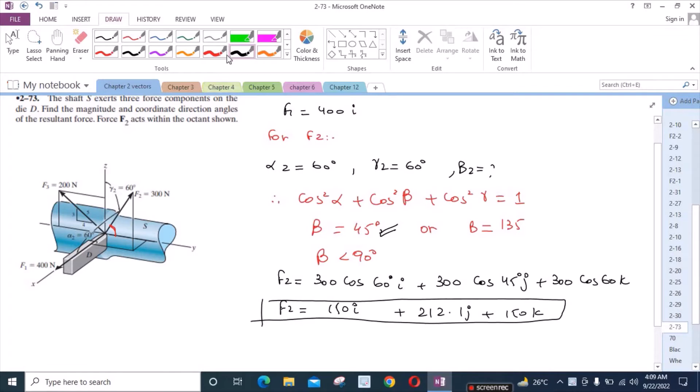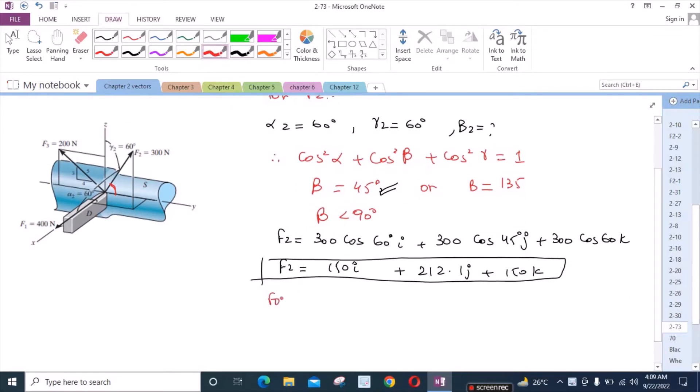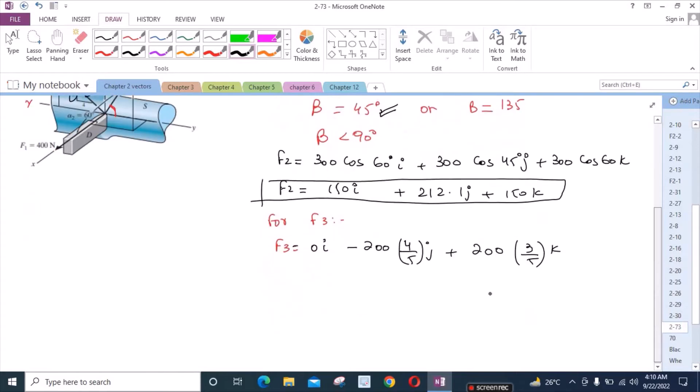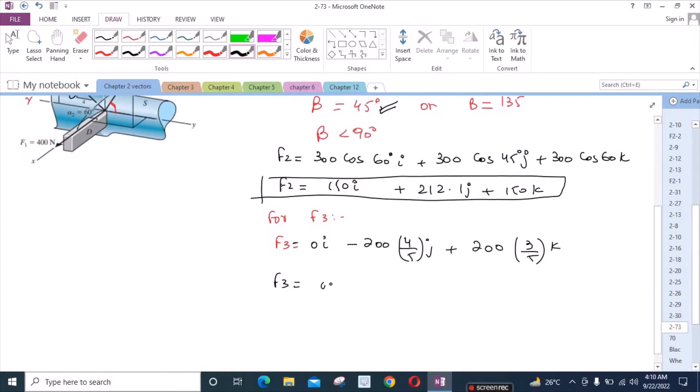Now for the force F3, F3 is on the plane of z-axis and y-axis. It has no component in the x-axis. So for F3, we have 0i minus, because it is directed in the negative y-axis, we have 204 over 5 times 4j plus 204 over 5k. From here, F3 = 0i - 160j + 120k.